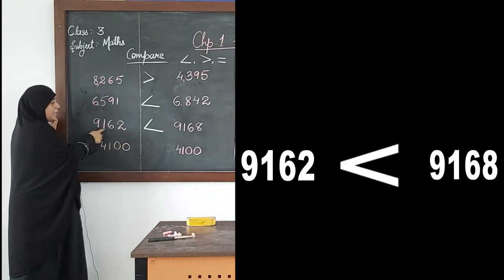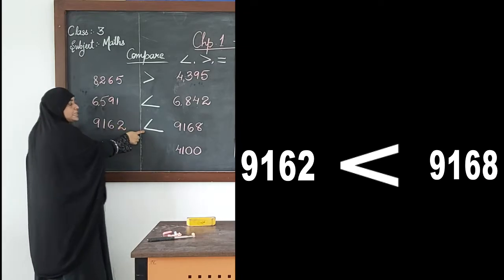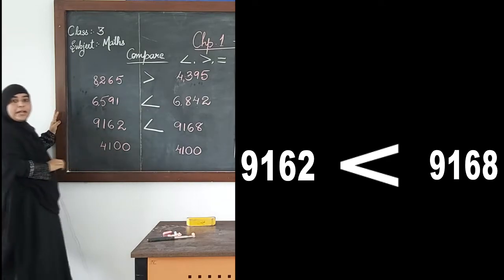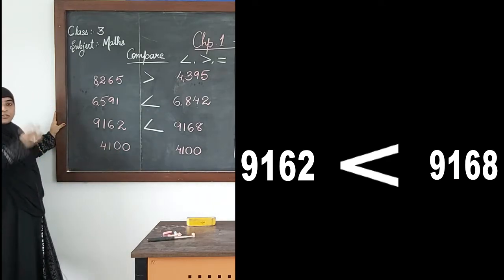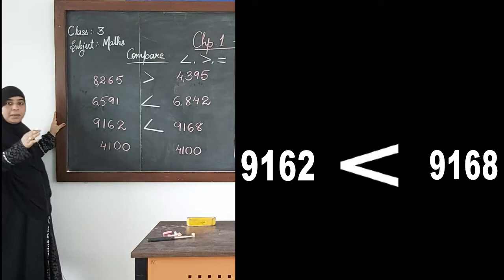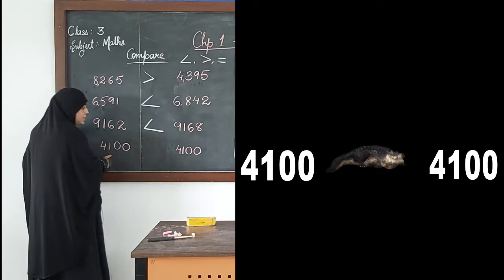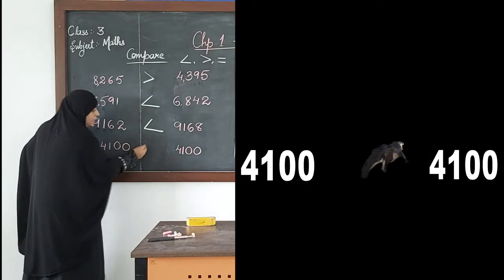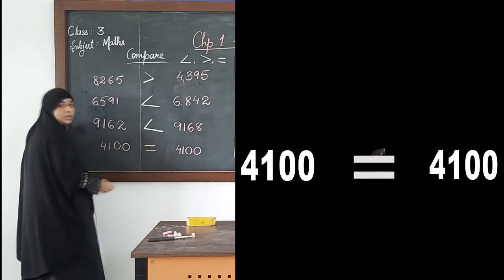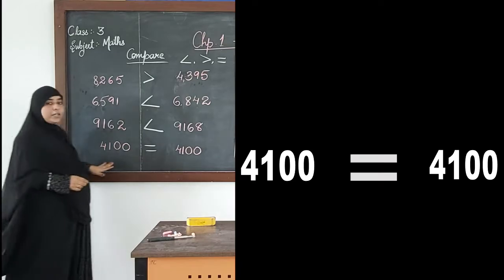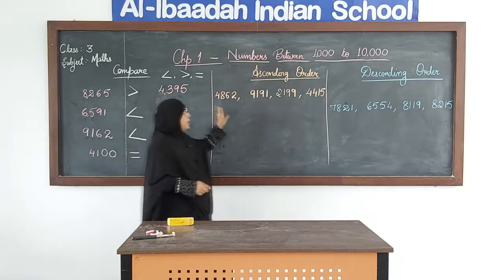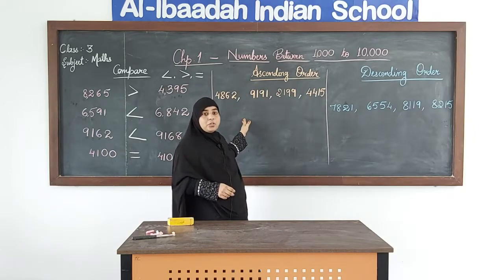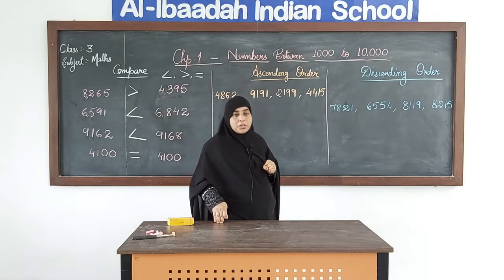So 9162 is less than 9168. I hope you now understand how we compare 4-digit numbers — you go place by place. When all the digits are the same, both numbers are equal, so we use the equal sign. Since we already know how to compare numbers, it should not be a problem for us to arrange them according to greater or smaller values.